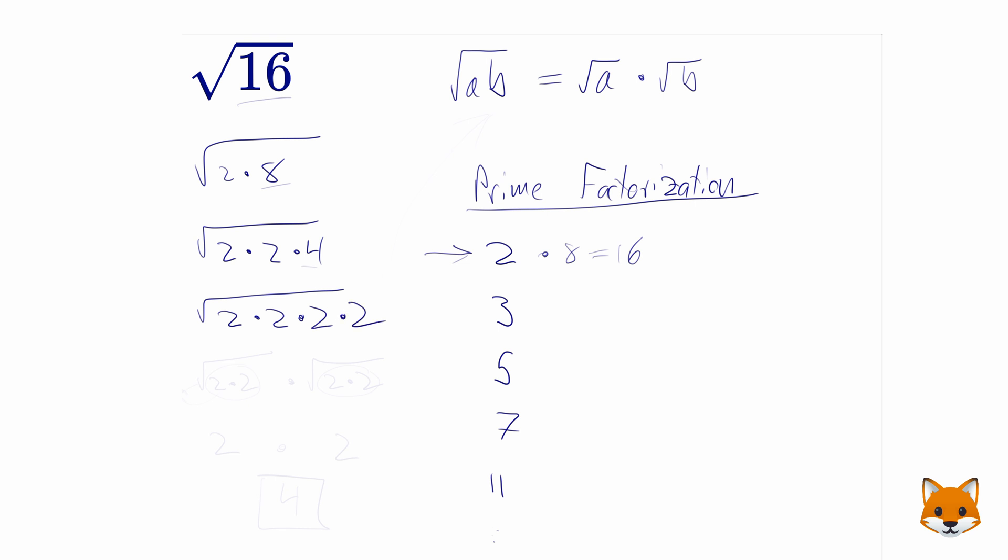Excellent. So now we're in a good place because these are all primes. 2's are all primes, and if you multiply 2 times 2, that's 4, times 2, that's 8, times 2, that's 16. So these multiply together, go back to our original number of 16, and these are all primes.